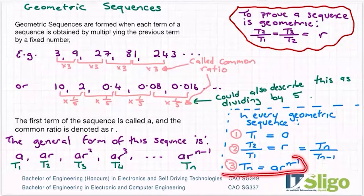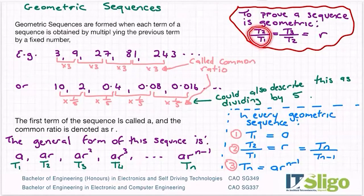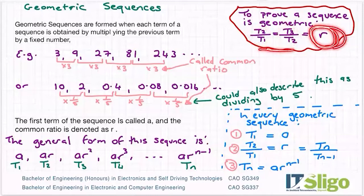And then three, that formula for the nth term: tn is equal to a times r to the power of n minus one. And that one's in the log tables. The final point I have on this slide is, if you're asked to prove that a sequence is geometric, then you're showing that t2 over t1 would be equal to t3 over t2. So if there's this common ratio between the terms, then the sequence is geometric.